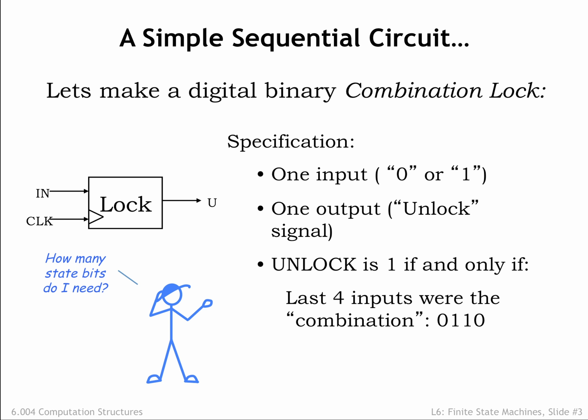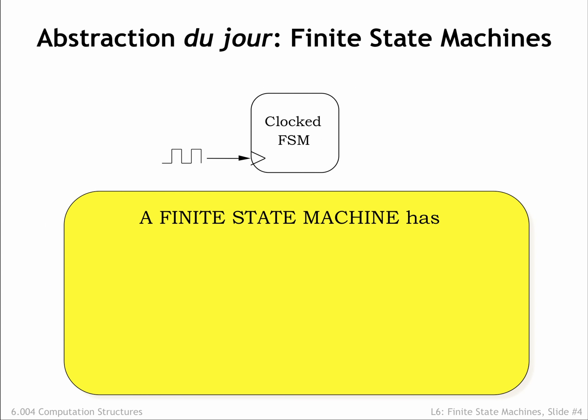With that observation in mind, let's figure out how to represent the desired behavior of our digital system. We can characterize the behavior of a sequential system using a new abstraction called a finite-state machine, or FSM for short. The goal of the FSM abstraction is to describe the input-output behavior of the sequential logic independent of its actual implementation.